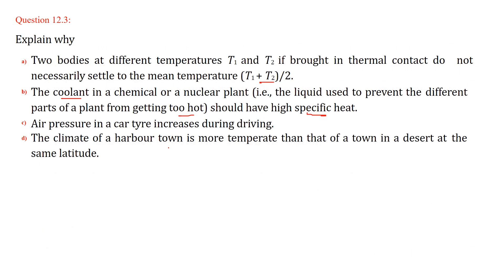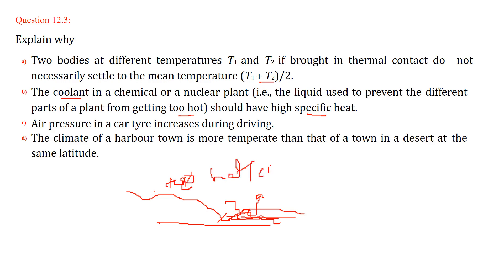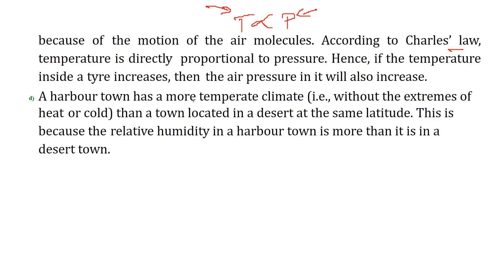The climate of a harbour town is more temperate than that of a desert town at the same latitude. A harbour town is surrounded by abundant water, which controls the season — it will not make the area too hot or too cold. This is not possible in areas with no water where evaporation and condensation do not occur. A harbour town has a more temperate climate, without extremes of heat and cold, compared to a desert town, because the relative humidity in a harbour town is higher.